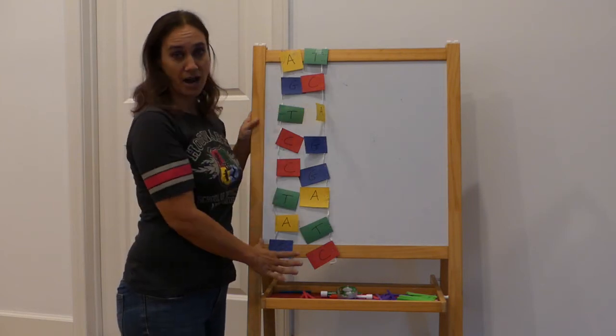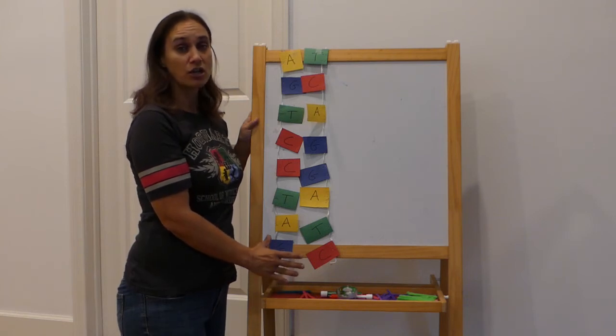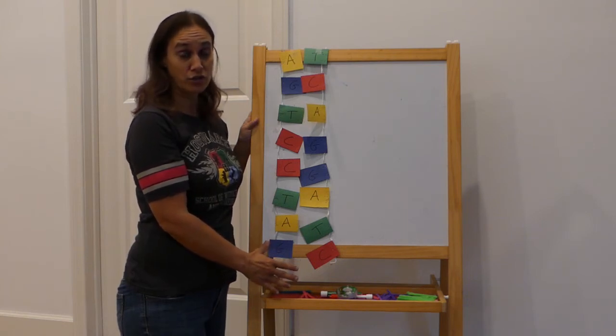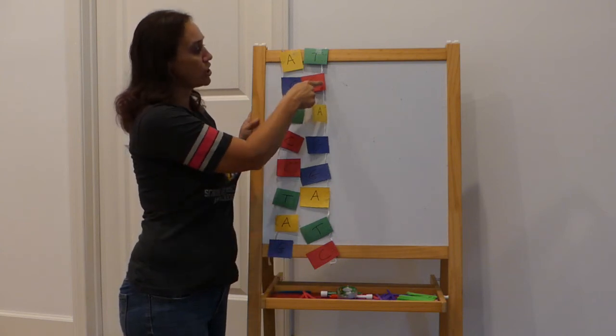So this right now is what your current DNA strand should look like. If it doesn't look like this, go ahead and rearrange your DNA strand so it does look like this.